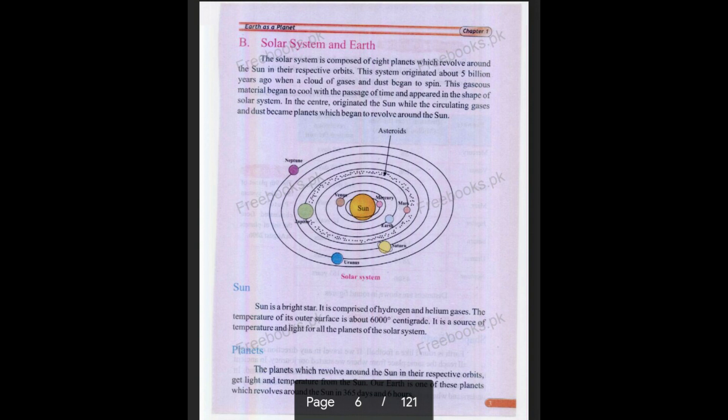Then let's talk about the planets. The planets which revolve around the Sun in their respective orbit get light and temperature from the Sun. Our Earth is also one of these planets which revolve around the Sun in 365 days and 6 hours.